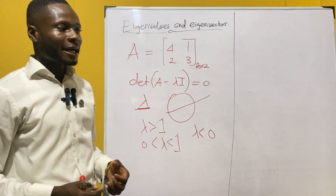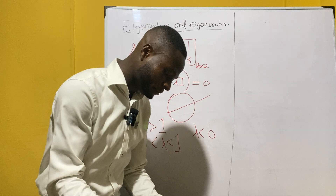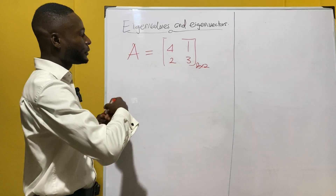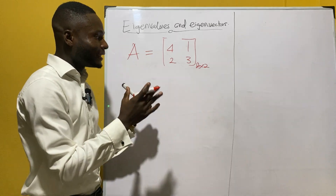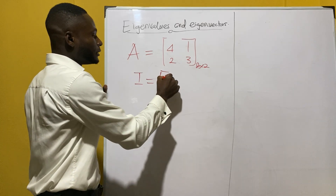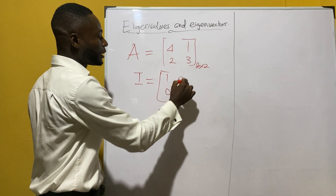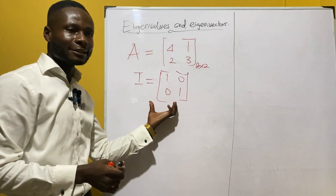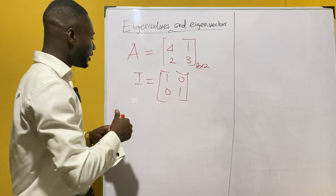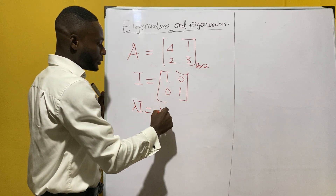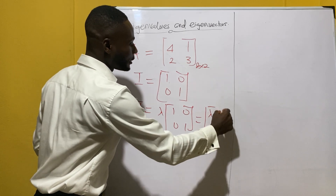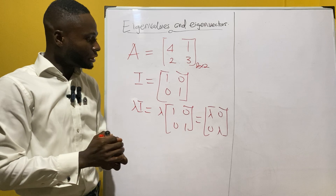Now let's look at how we can solve this two by two matrix to determine the eigenvalues and then the eigenvectors. First, you have to form an identity matrix that has the same size as the matrix given. The identity matrix here is going to be [1, 0; 0, 1], and then you multiply this identity matrix by the eigenvalue lambda. So lambda times the identity matrix equals [λ, 0; 0, λ].